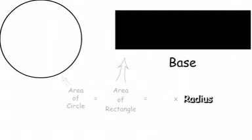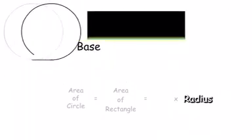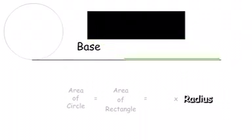To find the base, we need to look at the circumference of the circle. And when we compare the base and the circumference, we can see that the base is equal to one half the circumference.